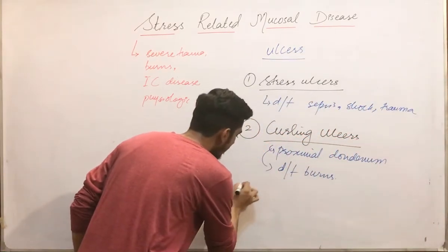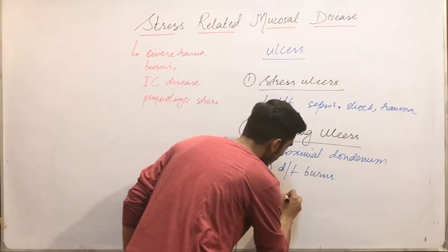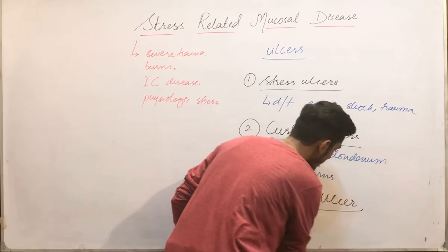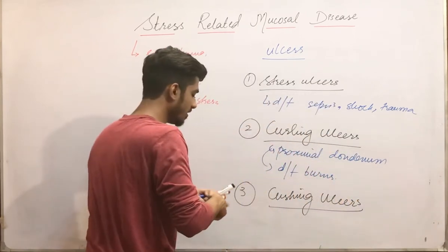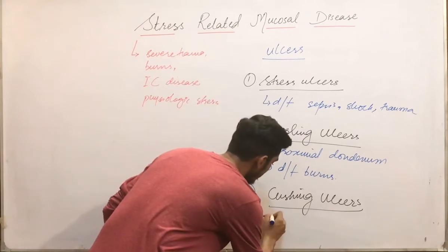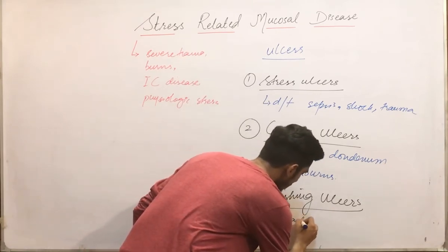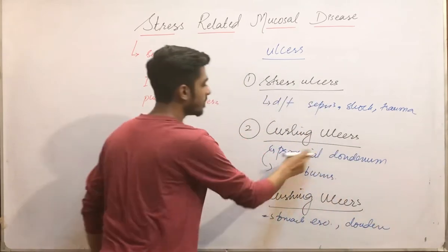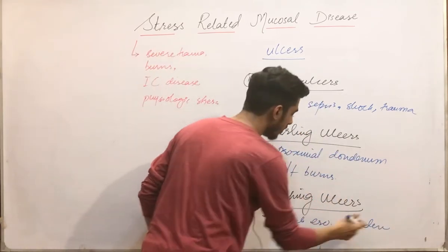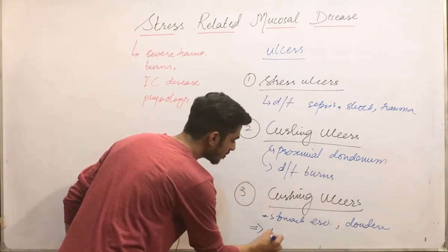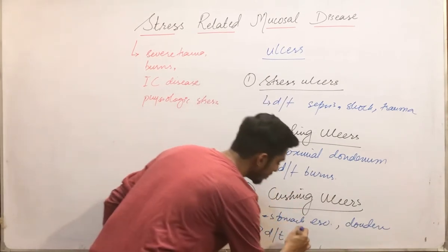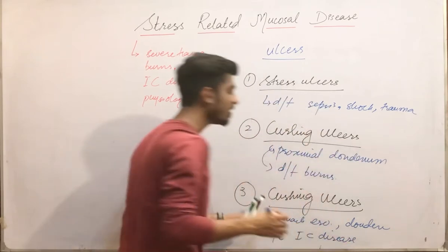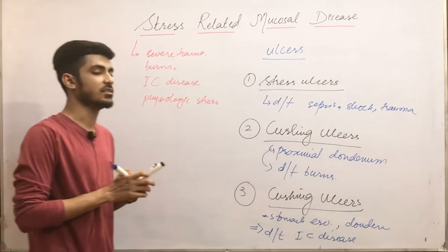The third and last type is called cushing ulcers. Cushing ulcers are found in the stomach, esophagus, as well as the duodenum — including the proximal duodenum. The major cause of cushing ulcers is intracranial disease. Remember these three types of ulcers.